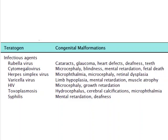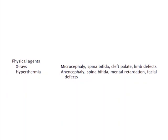Varicella virus may lead to limb hypoplasia, mental retardation, and muscle atrophy. HIV may lead to gross retardation and microcephaly. Toxoplasma may lead to hydrocephalus, cerebral calcification, and microphthalmos. Syphilis may lead to mental retardation and deafness. Physical agents like X-ray and hyperthermia also lead to varieties of abnormalities. X-ray may lead to microcephaly, spina bifida, and cleft palate. Hyperthermia may lead to anencephaly, spina bifida, mental retardation, and facial defects.